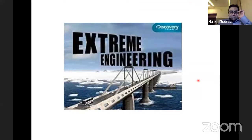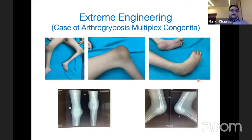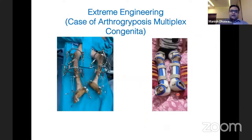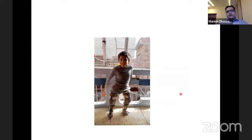An extreme case: arthrogryposis with deformities in the hip, knee, and foot — someone had previously operated on the foot. You can see the webbing at the knee. I performed a soft tissue release at the hip and knee, applied JESS in the feet, and applied Ilizarov with a SUV frame to correct the knee contracture. This boy was previously totally bedridden and had never attended school. I called him yesterday — he is now walking with a walker and has started going to school.